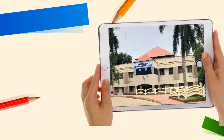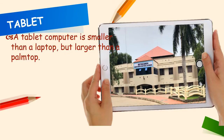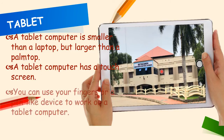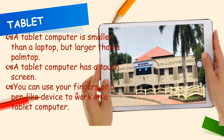The next type of computer is a tablet, or tab. A tablet computer is smaller than a laptop but larger than a palmtop. Like a mobile phone, a tablet computer has a touch screen — you can operate its features using your fingers or a pen-like device.